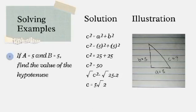Then C squared is equal to 50, because 25 plus 25 equals 50. We factor this as 25 times 2, then take the square root of both sides. C is equal to 5 square root of 2, because the square root of 25 is 5, and the 2 remains inside the square root.